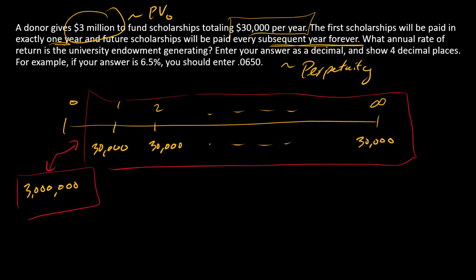We've got this swap taking place: donate $3 million and you get a stream of $30,000 scholarships per year. The first payment happens in year one, so our standard perpetuity formula will work. The present value of a perpetuity is the cash flow divided by the discount rate. We're trying to figure out what annual rate of return the endowment must be generating — so in this equation, we're solving for R.